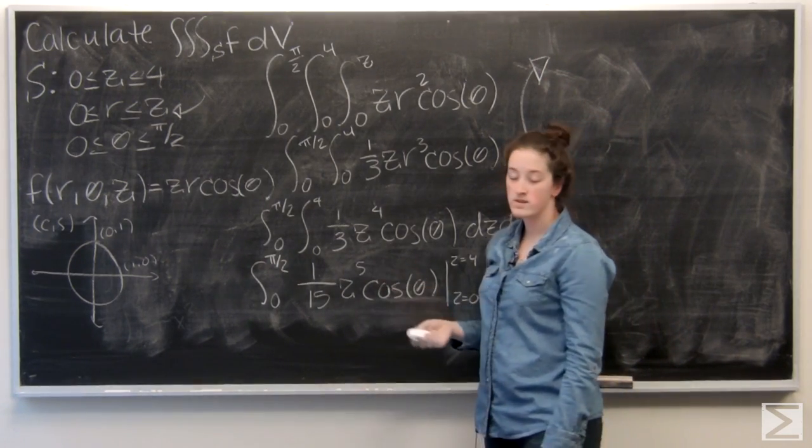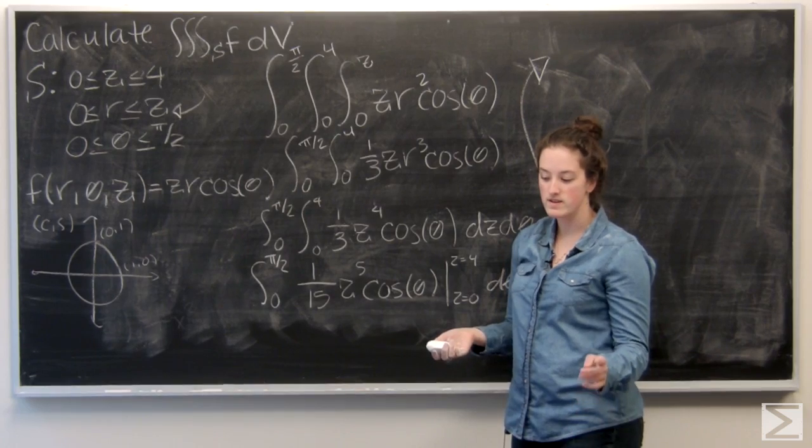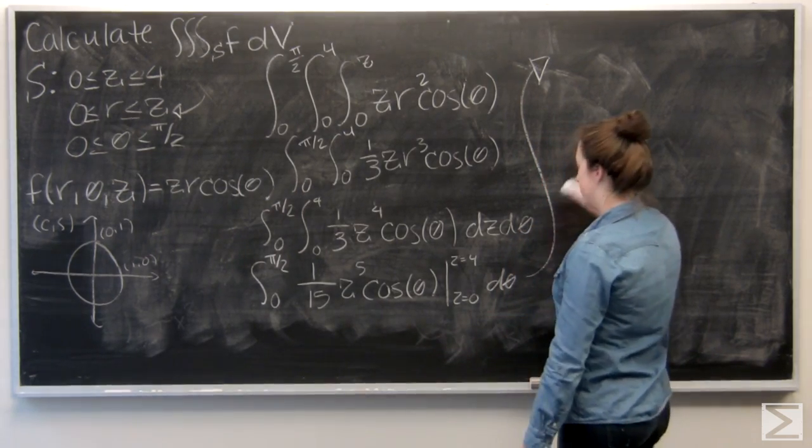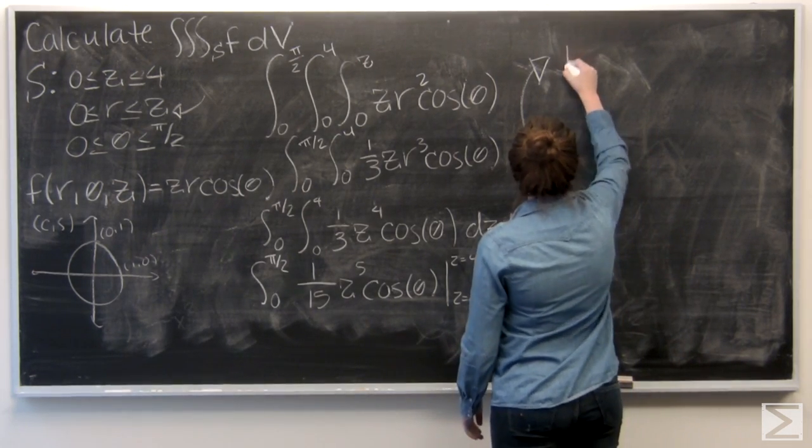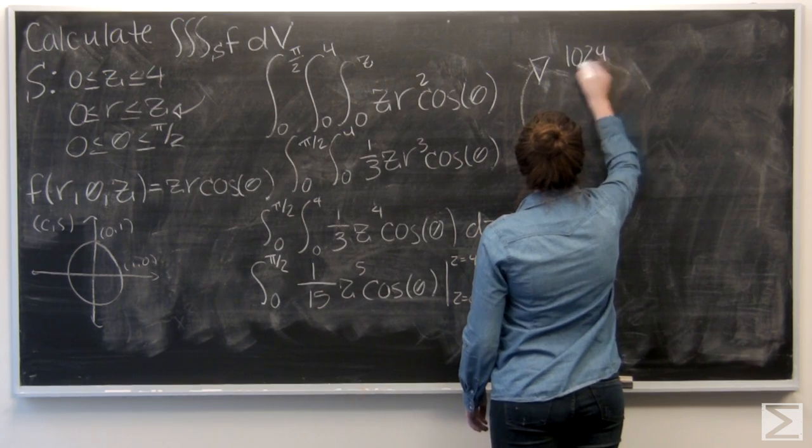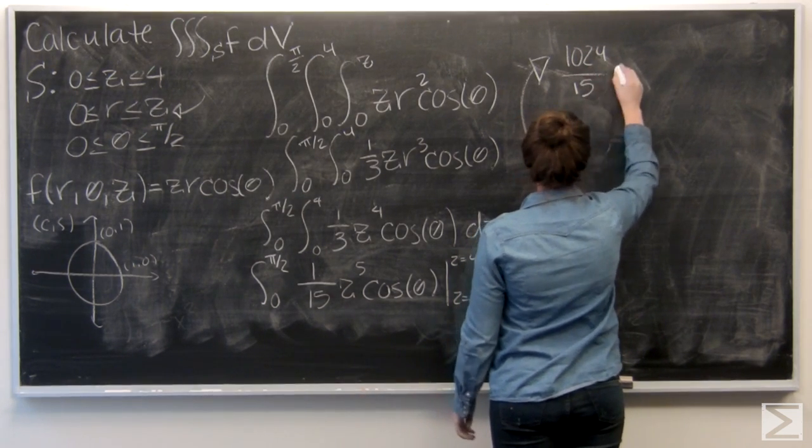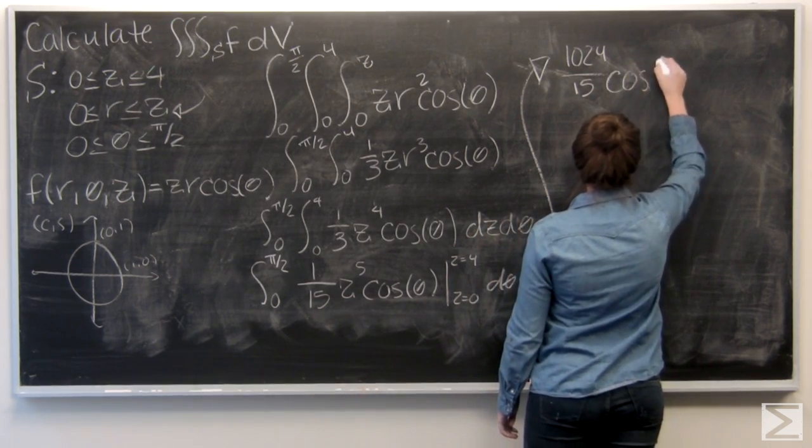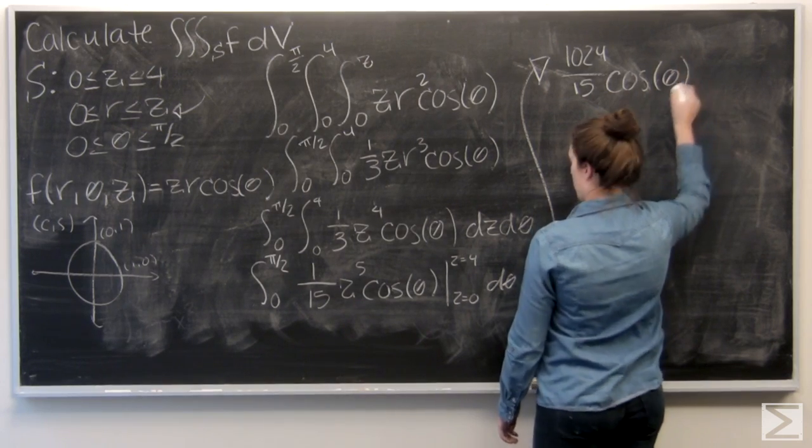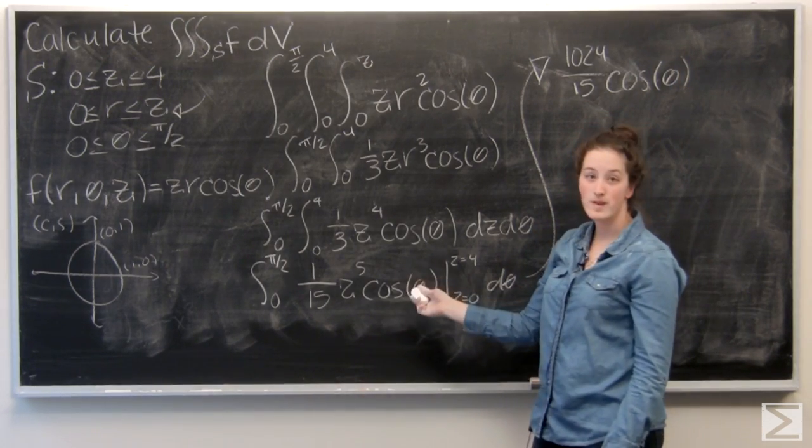So for z equals 4, four to the fifth is 1024. And then for z equals 0, that becomes 0.